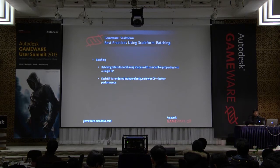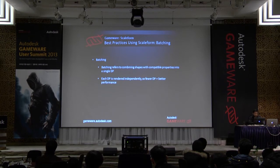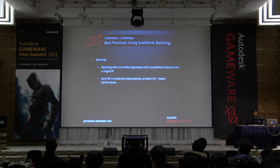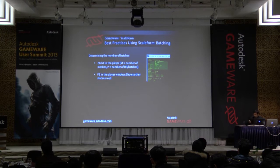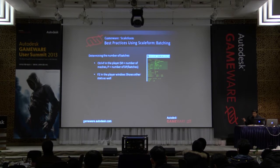So, batching. What is batching? Batching refers to combining shapes with compatible properties into a single draw primitive. You want to keep the number of draw primitives in your scene as low as possible, because display rendering performance declines linearly as more draw primitives are introduced. Each draw primitive is rendered independently, incurring a performance cost — so fewer draw primitives means better performance. I'm using the term 'batch' here — it is the same as a draw primitive. I'll be using batch and draw primitive interchangeably.